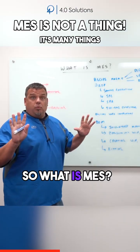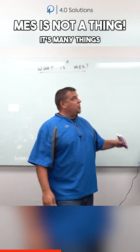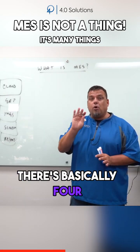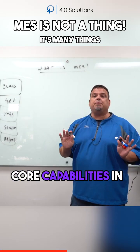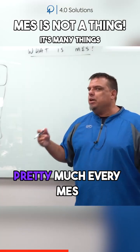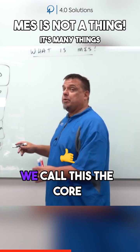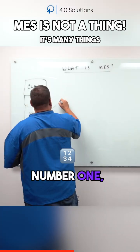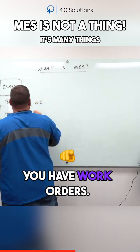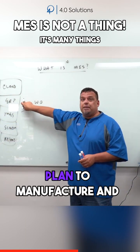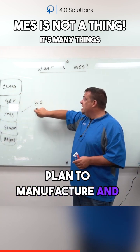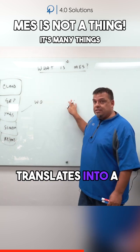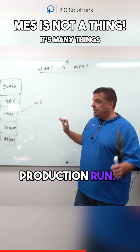So what is MES? A Manufacturing Execution System has basically four core capabilities in pretty much every MES system — we call this the Core Four. Number one, you have work orders: I take something that I plan to manufacture and turn it into a work order. That work order translates into a production run.